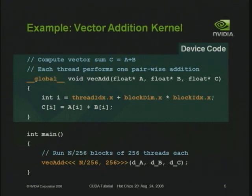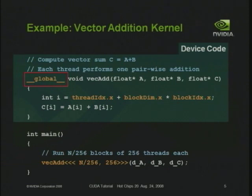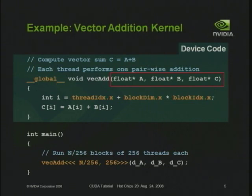Here's a simple example — the hello world of parallel programming: taking two vectors and adding them together. The program consists of two pieces: a normal sequential program running on the CPU and a parallel kernel invoked by it. The parallel kernel at the top executes on the GPU, tagged with the __global__ declaration spec to indicate it's a globally visible kernel entry point callable from host code. It's passed pointers to the two input arrays and one output array.